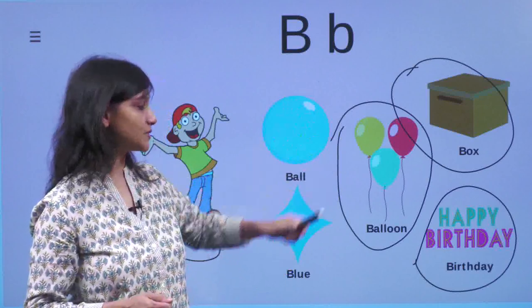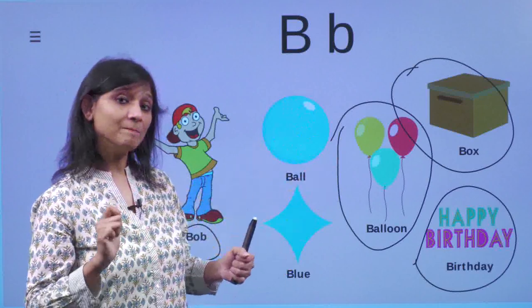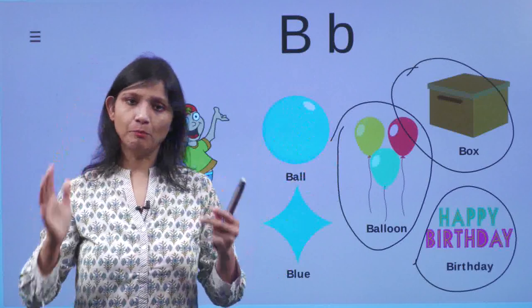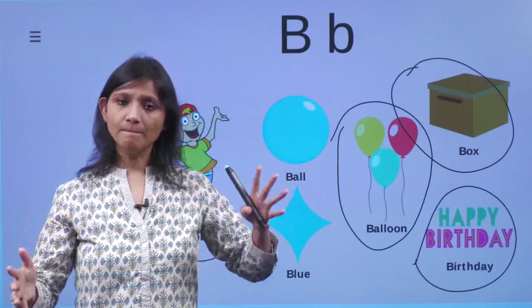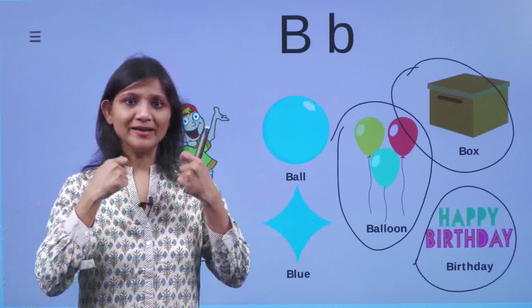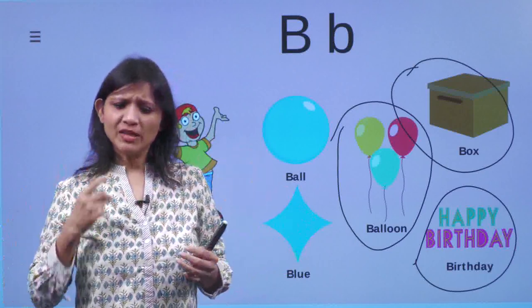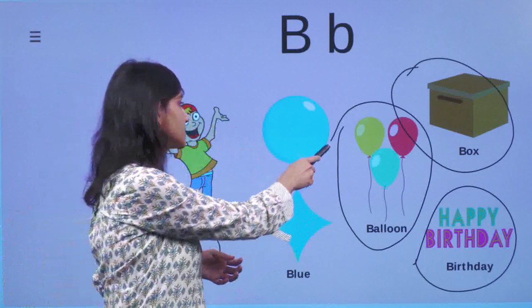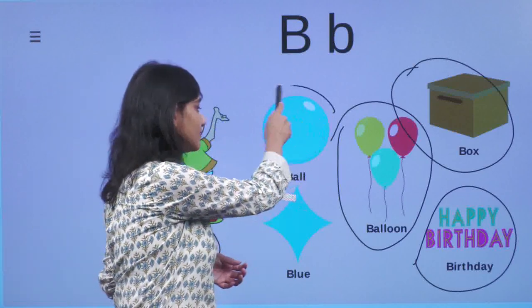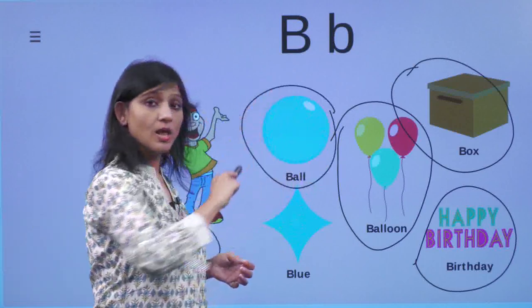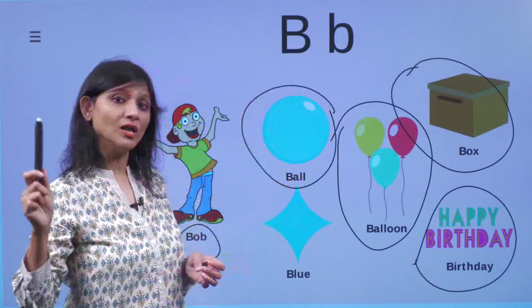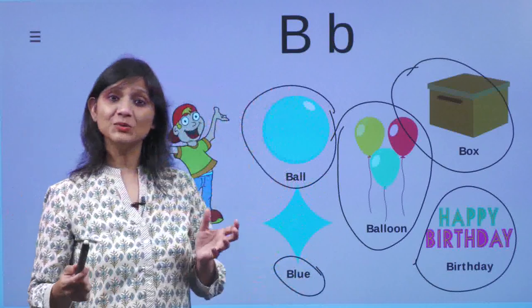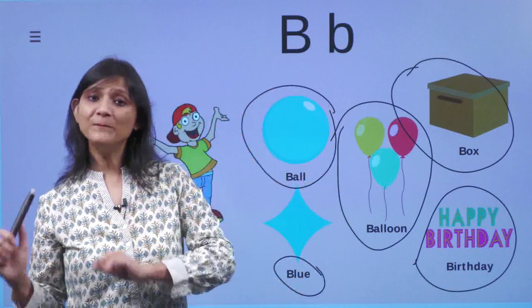And when he looked at the box, his eyes sparkled. He ran to the box. And when he opened the box, what did he find? He found a ball. And what was the color of the ball? Blue. So Bobby was very happy because on his birthday, he got balloons. He also had a box in which his father had kept a blue ball.